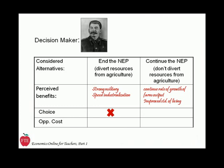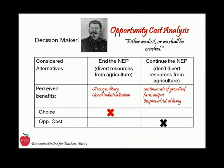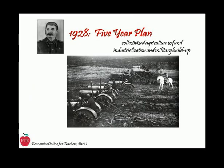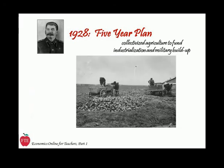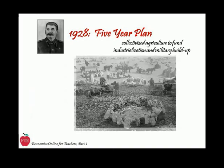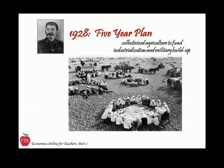Stalin's perception of the opportunity cost of diverting resources from agriculture to heavy industrial production is captured in his comment: 'Either we do it or we shall be crushed.' In 1928, he replaced the NEP with agricultural collectivization as part of the Five-Year Plan. Farm output was purchased by the government at artificially low state prices and sold in the cities or exported abroad at higher prices to fund industrialization and military buildup.